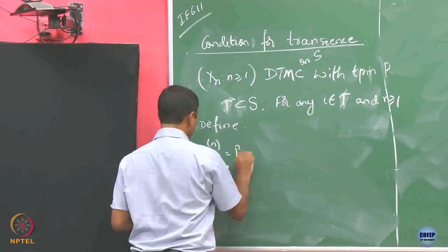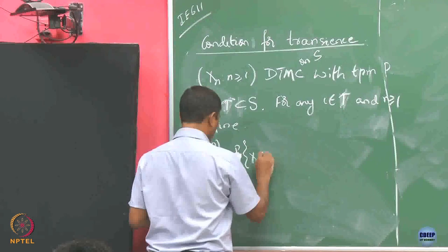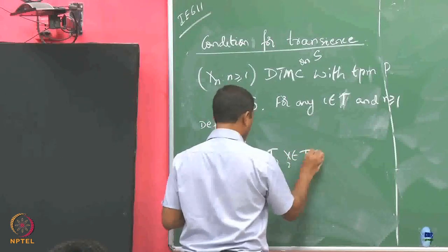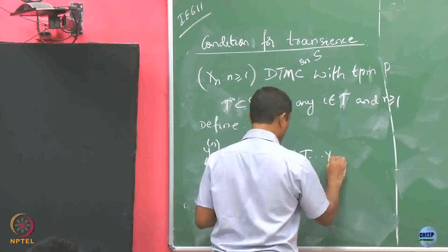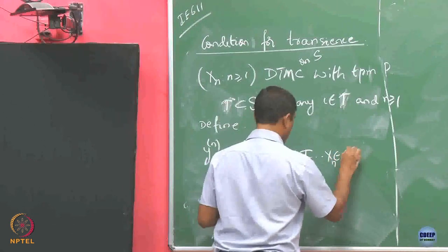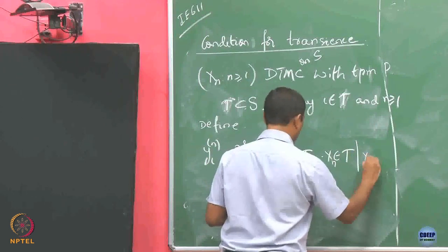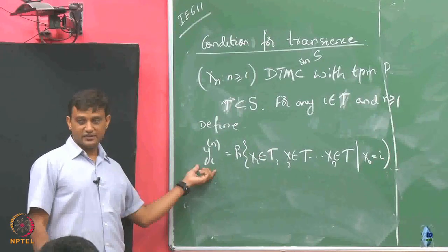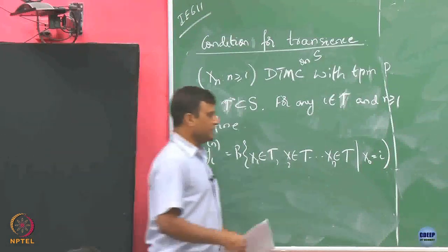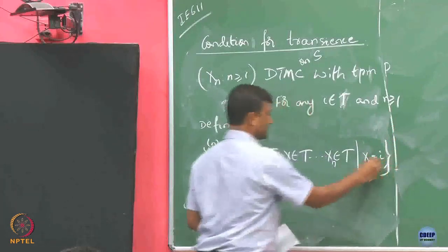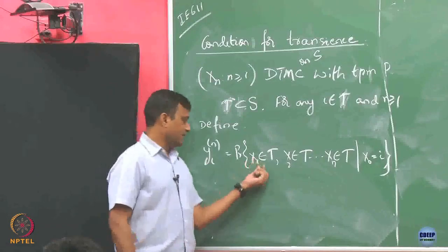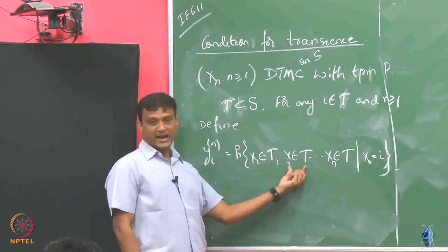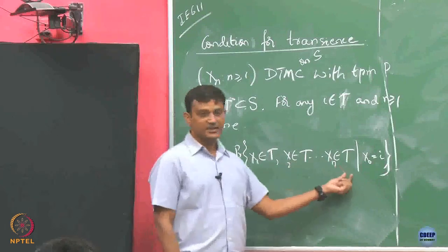This Yn is going to be a probability. What this probability denotes — what event is it associated with? This is the probability of an event where I start with state i, then in the first step I remain in my tau, second step I again remain in tau, and in the nth step also I remain in tau.